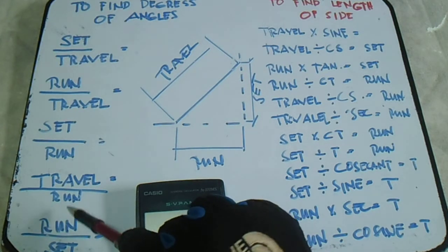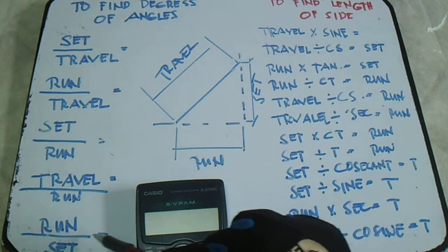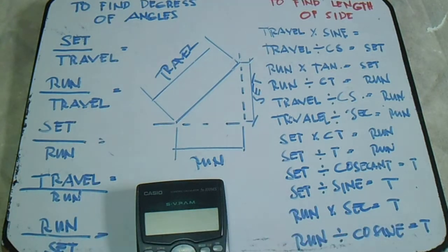Next is travel divided by run equals secant, and then run divided by set equals cotangent.